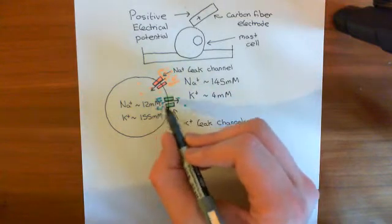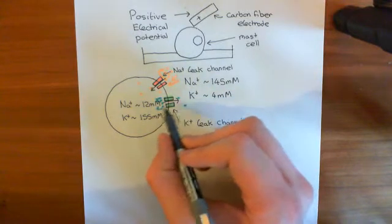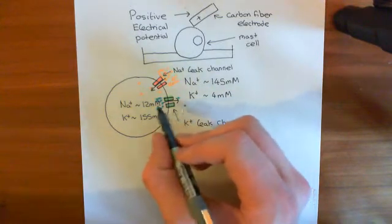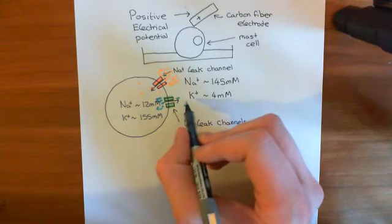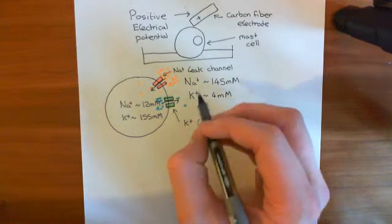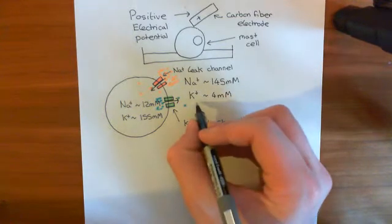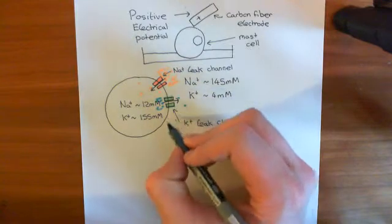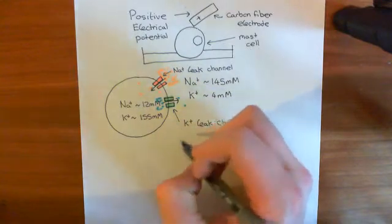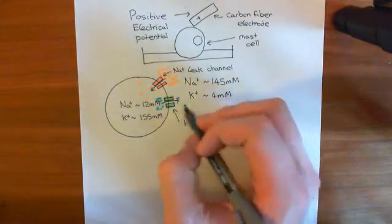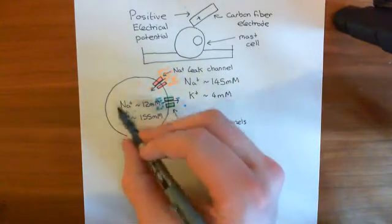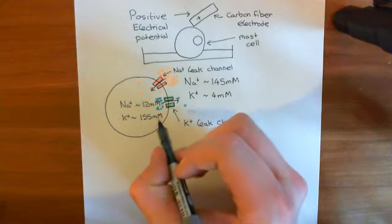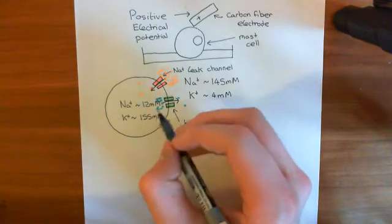So you've got this net movement of positive charge out of the cell, basically. That's going to mean that the electrical potential of the extracellular compartment increases, and the electrical potential of the intracellular compartment goes down.